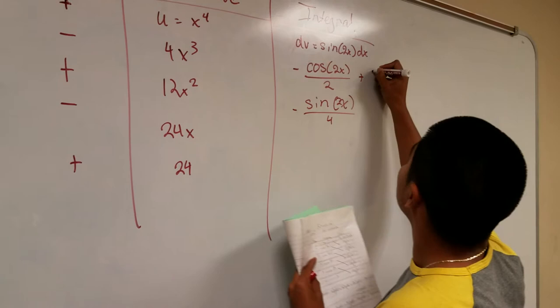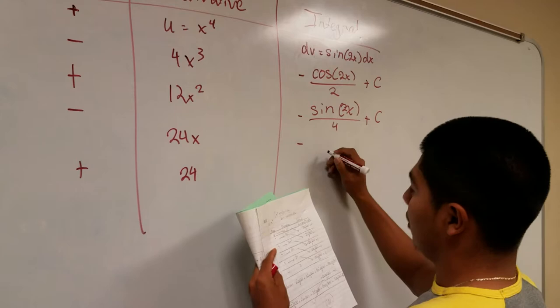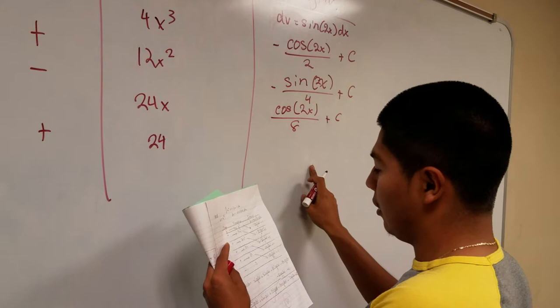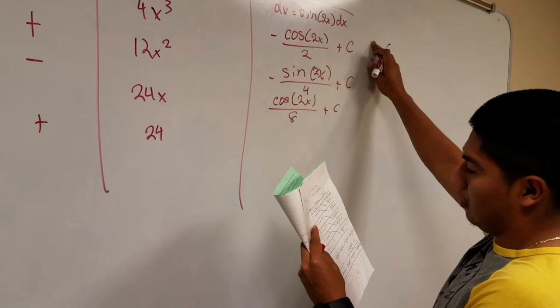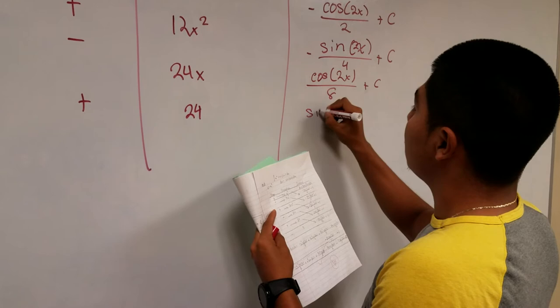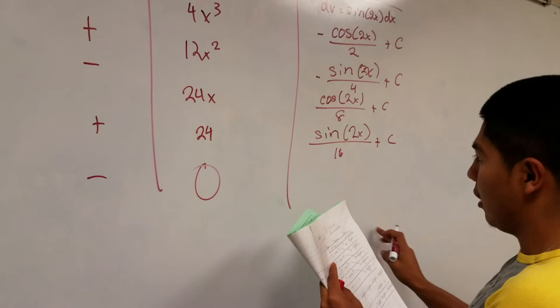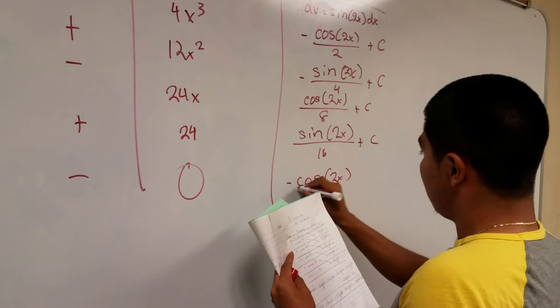Continuing the integrals: this becomes positive cosine of 2x over 8 plus c, and then this is negative again. This becomes positive sine of 2x over 16 plus c. I also need to include the next derivative, which is 0, and our last integral is going to be cosine of 2x over 32 plus c.